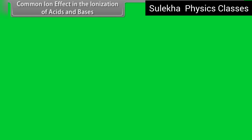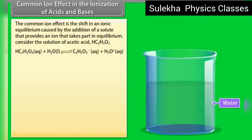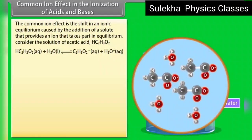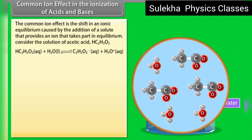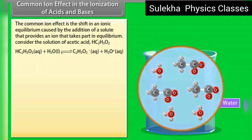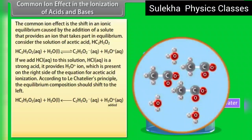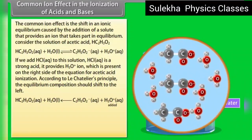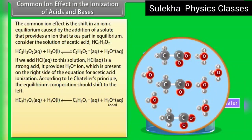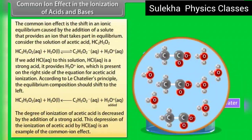Common ion effect in the ionization of acids and bases: the common ion effect is the shift in an ionic equilibrium caused by the addition of a solute that provides an ion that takes part in the equilibrium. Consider a solution of acetic acid HC2H3O2. If we add aqueous HCl — a strong acid — it provides H3O+ ions present on the right side of the acetic acid ionization equation. According to Le Chatelier's principle, the equilibrium shifts to the left, decreasing the degree of ionization of acetic acid. This depression is an example of the common ion effect.